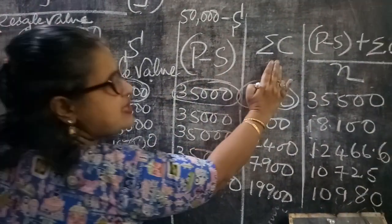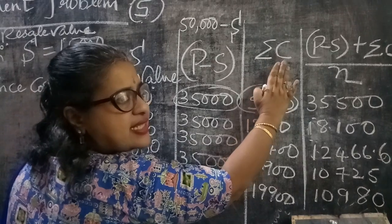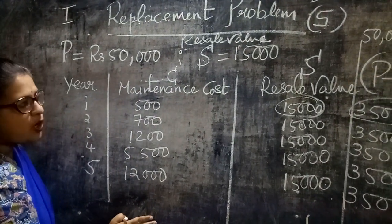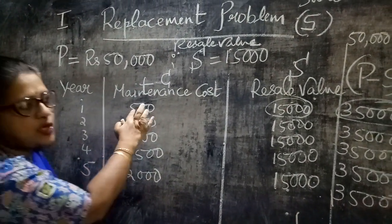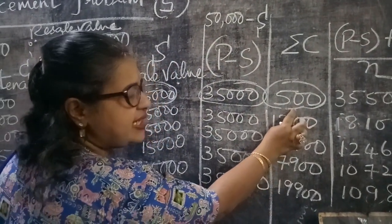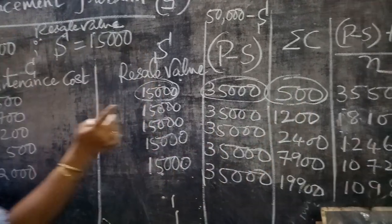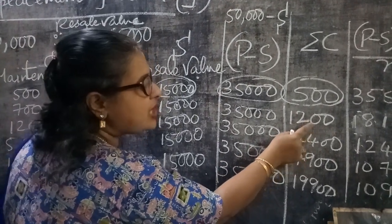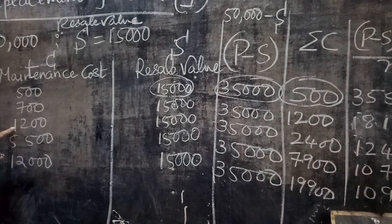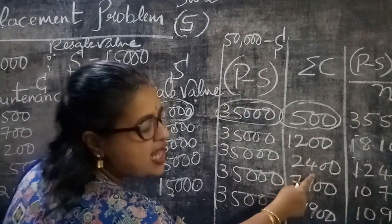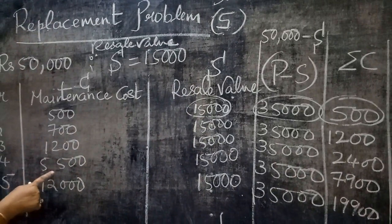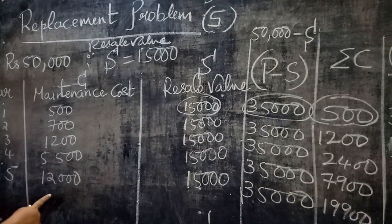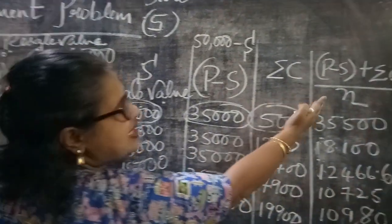The next column is summation C, that is the cumulative maintenance cost. The first value is 500, so you write 500. The next value is 500 plus 700, giving 1,200. Then 1,200 plus 1,200 gives 2,400. Then 2,400 plus the next maintenance cost gives 7,900. And 7,900 plus 12,000 gives the next cumulative value.